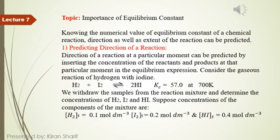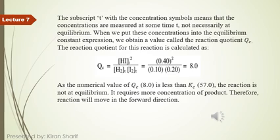The brackets denote molar concentration. The subscript 't' means we have measured the concentrations at some time — not necessarily at equilibrium. We don't need to measure at equilibrium; we can measure concentrations at any particular moment during the reaction.